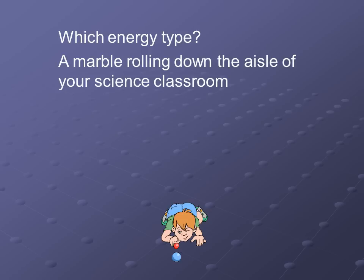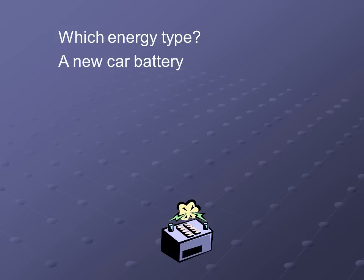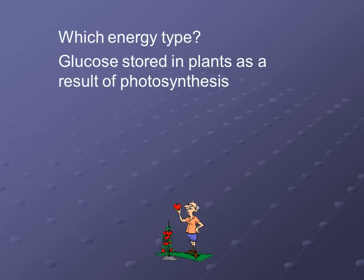A marble rolling down the aisle of your science classroom — because the marble is rolling and moving, it's energy in motion, it has to be kinetic energy. Next: a new car battery. Just like our example before, there's energy stored up in batteries. This is a new car battery, so we'll assume it's full of energy — it's stored energy, which makes it potential energy. Next: glucose that is stored in plants as a result of photosynthesis. This has some distractors, but right here it says the energy is stored, and that stored energy tells us it has to be potential energy.